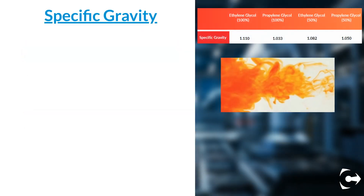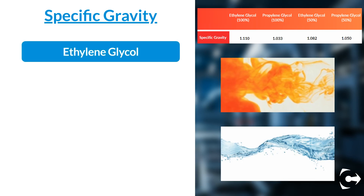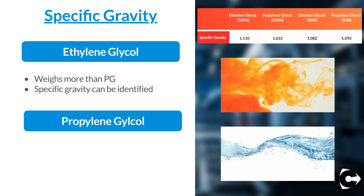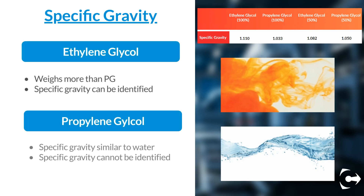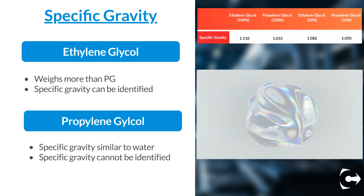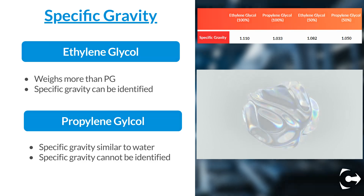At a high level, one gallon of PG will weigh less than EG, and it is almost impossible to identify the specific gravity of PG solutions, as it is very similar to that of water.